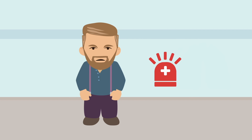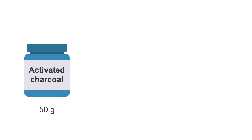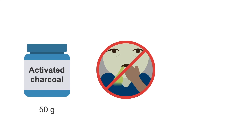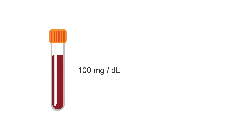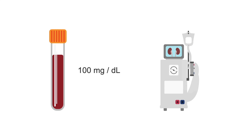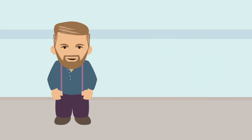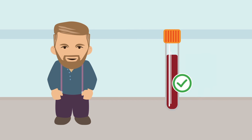In the emergency department, our patient received 50 grams of activated charcoal. He was given medications to reduce his nausea and vomiting, and intravenous fluids containing potassium, sodium bicarbonate, and dextrose. His salicylate level two hours after the overdose was 100 mg per deciliter, so a nephrologist was consulted to start dialysis. His symptoms resolved, and his salicylate level was undetectable after 36 hours.